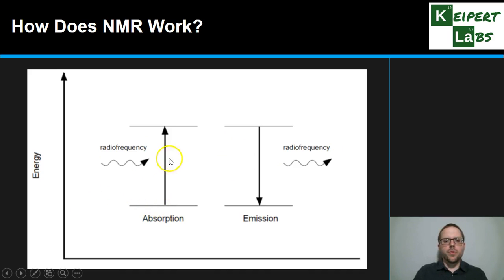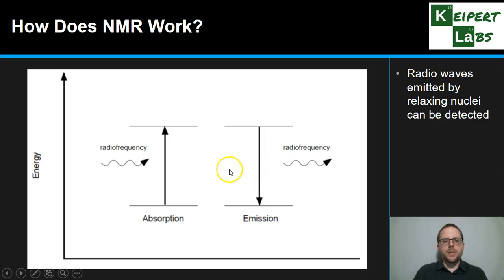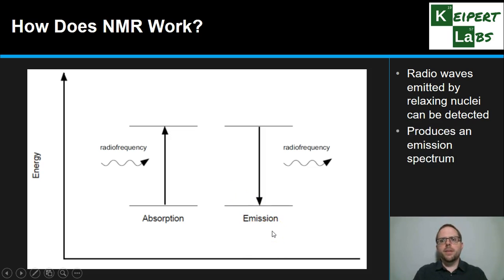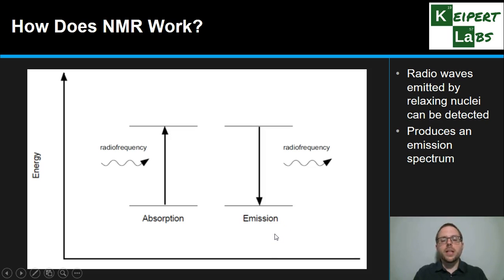The nucleus absorbs radio wave energy to go up, then releases radio frequency energy to go back down. The emission is what we are detecting — we're looking for the radio waves given off by relaxing nuclei in a magnetic field. This generates an emission spectrum, and the signals we get in this spectrum tell us about the nuclei, or the structure of the molecule.